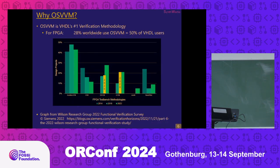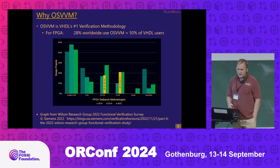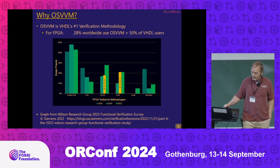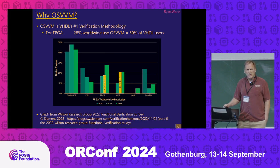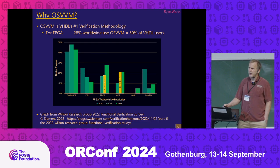Why OSVVM? Within the Wilson verification survey done by Siemens, OSVVM is VHDL's number one verification methodology. 28% use OSVVM worldwide, and when you look at the languages used for verification, VHDL is about 50% — for FPGA it's about 56% — so roughly 50% of VHDL users are using OSVVM at this point.